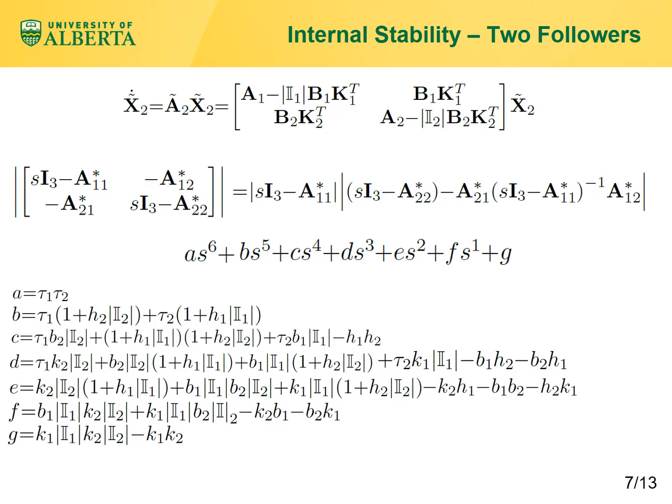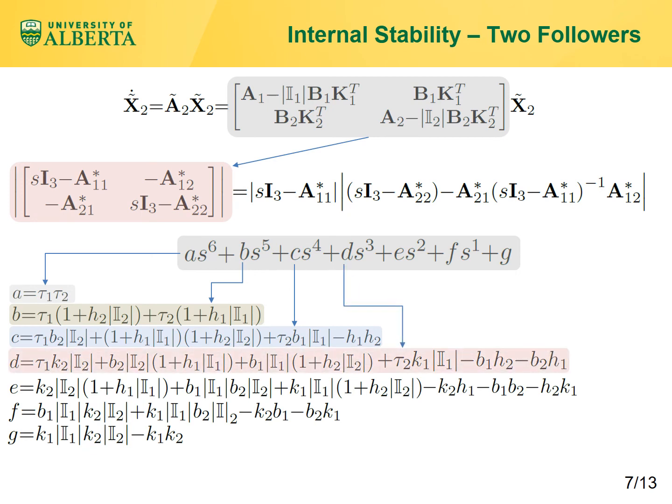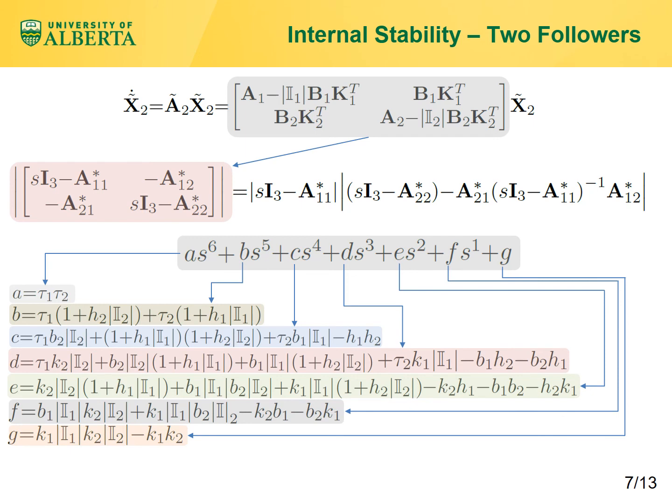Consider a platoon with two followers as a case study. In the state-space representation, the system matrix is the highlighted matrix. Using this, we can obtain the characteristic polynomial of the system, which is the determinant of this matrix and results in a sixth-degree polynomial equation with coefficients a, b, c, d, e, f, and g as provided.